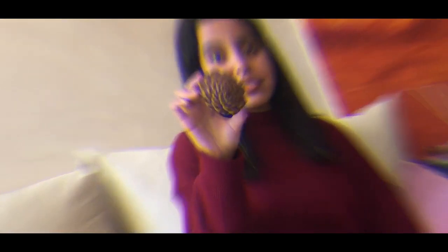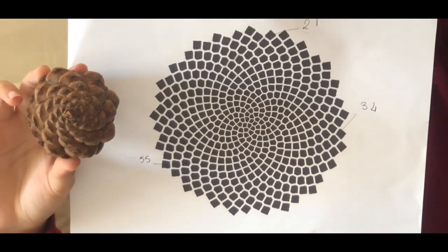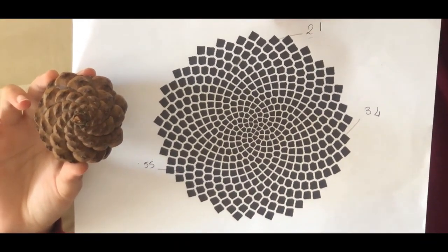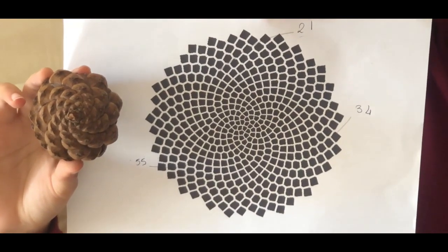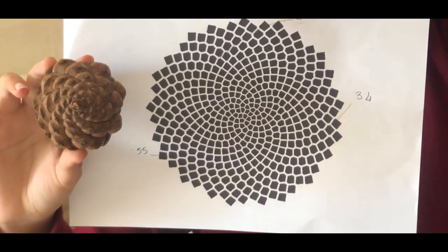Now that you know what a Fibonacci spiral is and what it looks like, take a look at this pine cone. Do you see how it resembles the same spirals? The same is true of almost all pine cones. If you count their spirals in any direction, you will get a Fibonacci number.